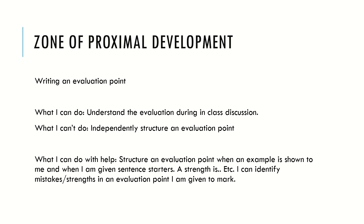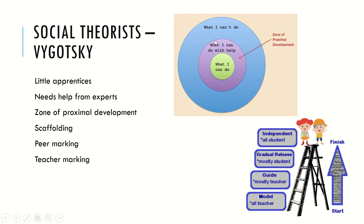Other scaffolding tools include sentence starters — for example, 'A strength is... This is a strength because...' — which guide students on structure. Another scaffold is giving students an example to mark: identifying the strengths, weaknesses, mistakes, or good things about it. You might struggle to write a piece on your own, but you can first pick apart someone else's work, which helps you move to the next step. The struggle zone is where you want all your students to be, but as their little apprentices, you can't leave them there alone — you must put scaffolding in place.